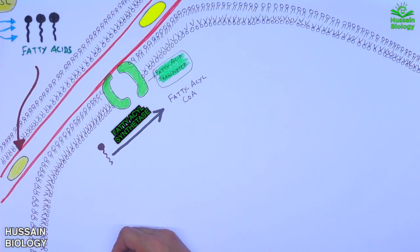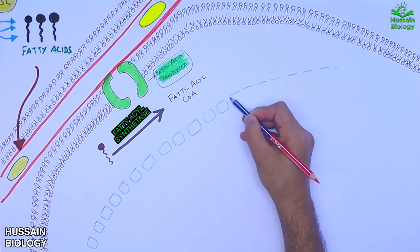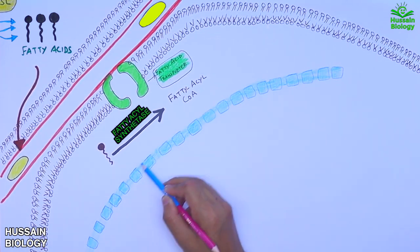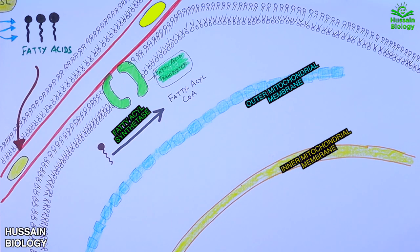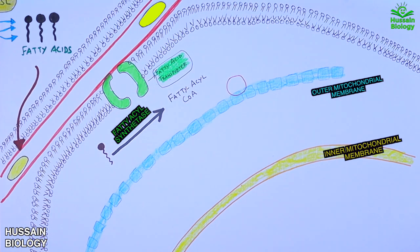Now here we see within the myocyte we have the mitochondria. It has an outer mitochondrial membrane and an inner mitochondrial membrane as shown in the diagram. On the outer membrane we have the CPT1 enzyme, that's carnitine palmitoyltransferase.